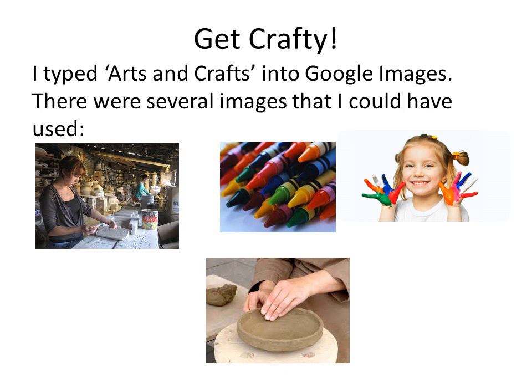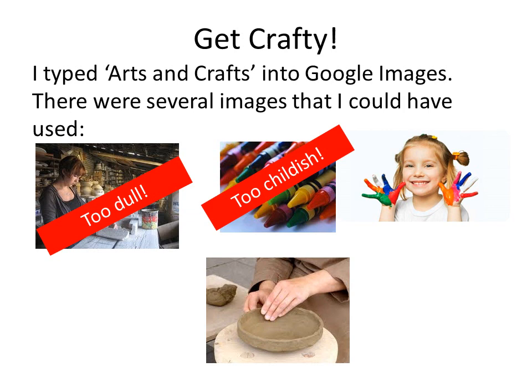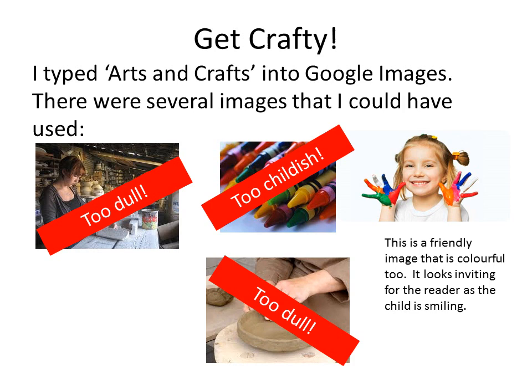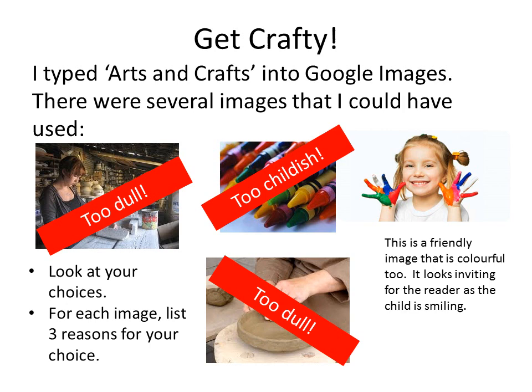Here's an example of what I did. I typed 'arts and crafts' into Google Images. The first image was too dull — not bright enough. The second image was too childish — the crayons make it look like it's for preschool children. Another image was just too dull, with browns and beiges that aren't very exciting. But one image was friendly, colourful, and inviting for the reader — the child is smiling, with nice bright colours and a large smile. It looks friendly and appealing. For each image, list three reasons for your choice.